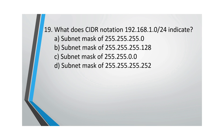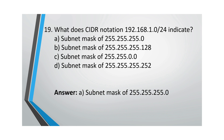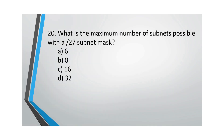Question 19: What does the CIDR notation 192.168.1.0/20 indicate? Option A is correct. Question 20: What is the maximum number of subnets possible with a /27 subnet mask? The correct answer is option B. This type of question was discussed previously — you can refer back for understanding.